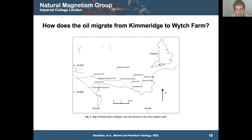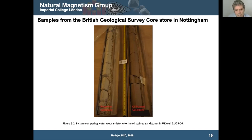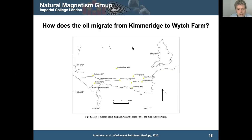Our first attempt — not particularly successful — was in the Wessex Basin. The idea was to take cores from this hydrocarbon system, determine the migration path independently using magnetics, and then compare with 3D basin modelling based on 3D seismic data. We're very lucky in the UK that since the 1960s or 70s, half of every core drilled anywhere in the UK — onshore or offshore — has to go to the government and is stored at the British Geological Survey in Nottingham. As academics we have free access to all of this, which is a fantastic resource.